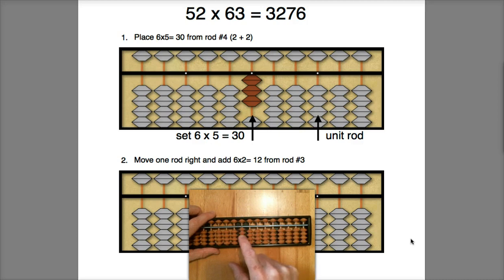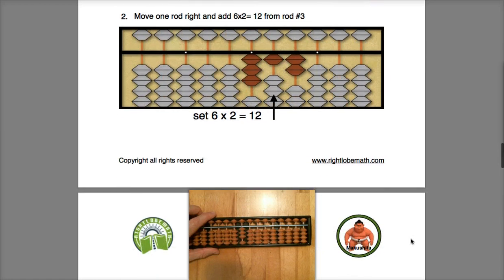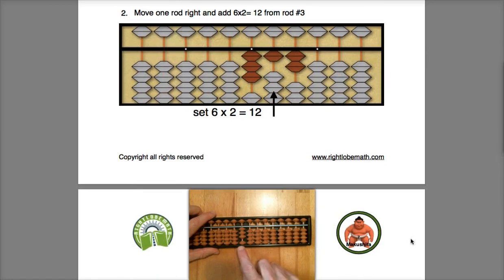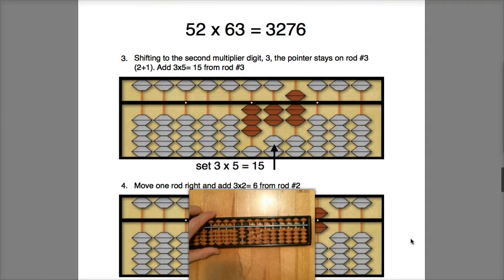Now I'm going to move to the second multiplicand digit, move one rod right. I'm going to do 6 times 2, which is 12.